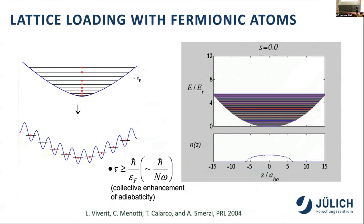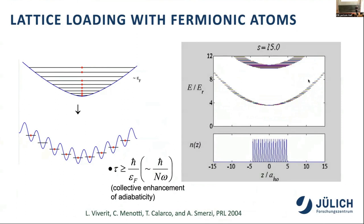You can do this with bosons or also with fermions. With fermions, you have a collective enhancement of adiabaticity because fermions do not like to sit in the same lattice site. If you raise the potential, you end up with one atom per lattice site — an idea we had 20 years ago with colleagues in Trento. Some of the posters presented, in particular those of Juhi and Christina, connect to that kind of thing.